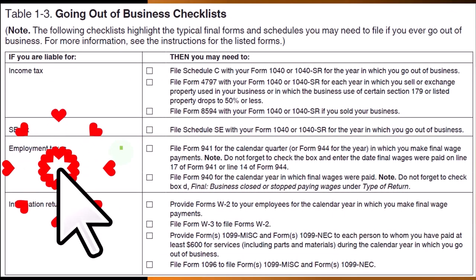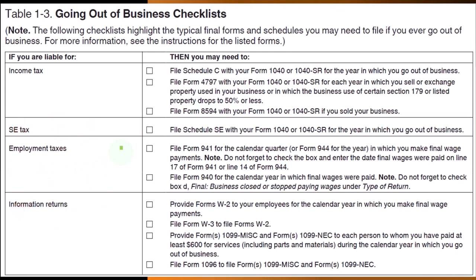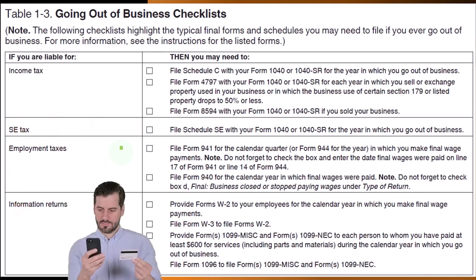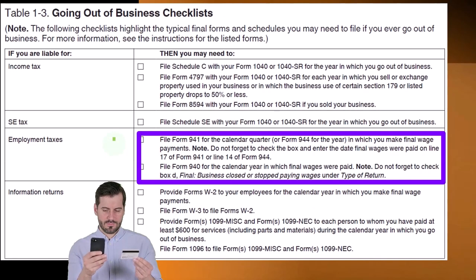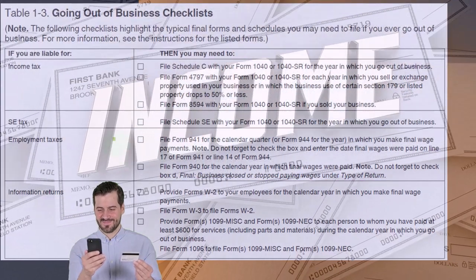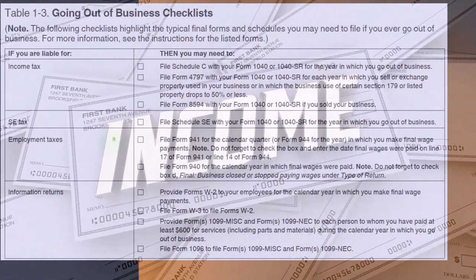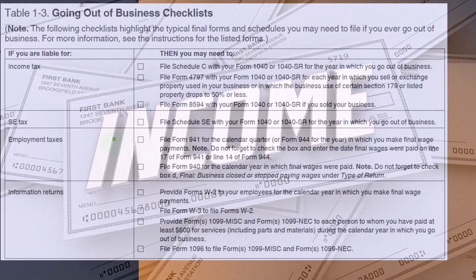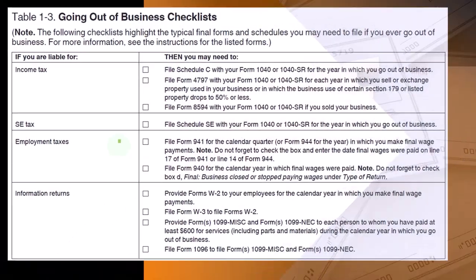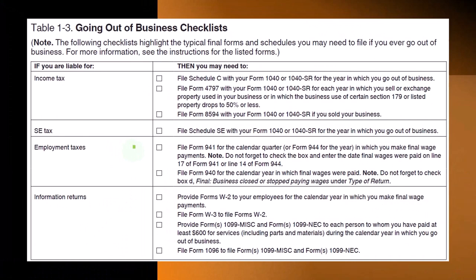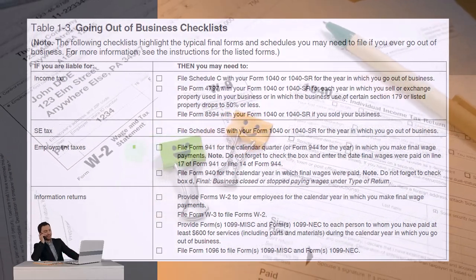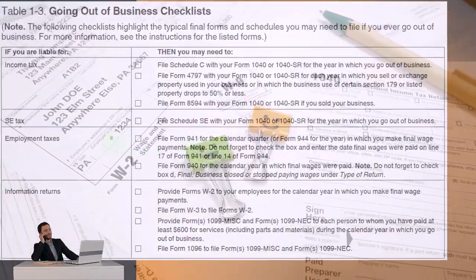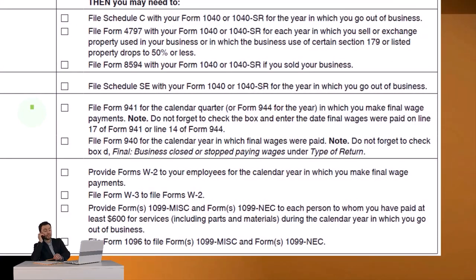For employment taxes — this only applies if you had employees, not contractors — file Form 941 for the calendar quarter in which you make final wage payments. Often when people go out of business in the middle of the year, they try to cut things off and drop finishing up the payroll taxes. But even if you didn't do payroll for the last couple of quarters, you still need to file the W-2s and make sure you've completed the 941s and the 940. Payroll is a problem you don't want to mess up.